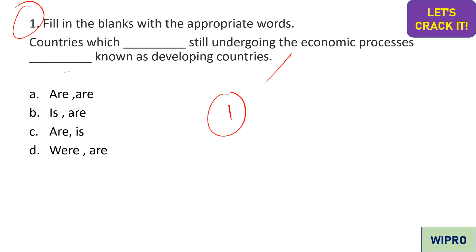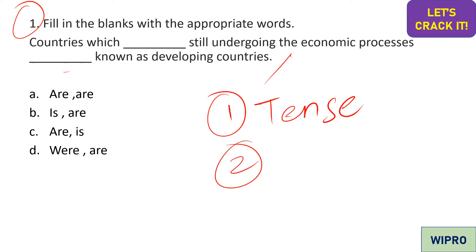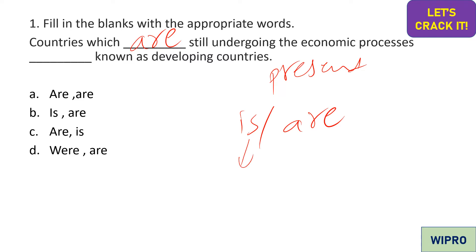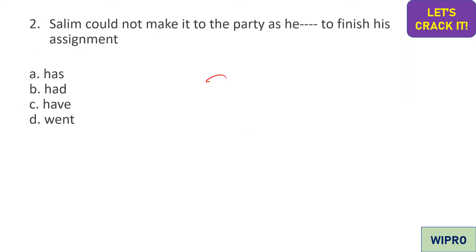The first thing you need to do is detect the tense of the sentence. 'Countries which still undergoing the economic process' — this is present continuous tense. In present continuous tense, we use 'are' for plural and 'is' for singular. Since 'countries' is a plural word, the answer is 'are': 'The countries which are still undergoing the economic process are known as...' — so option A is the correct answer.